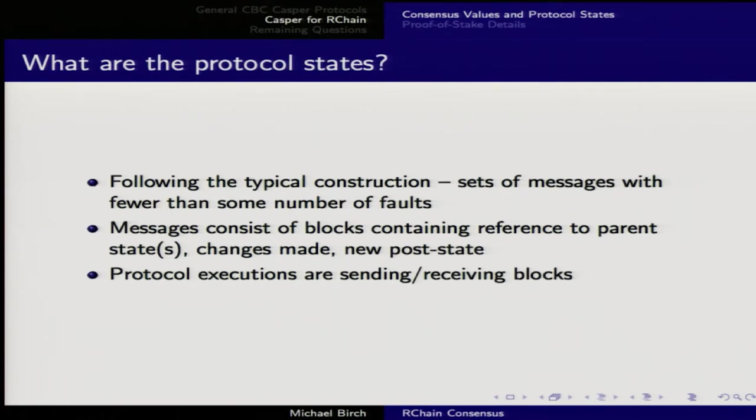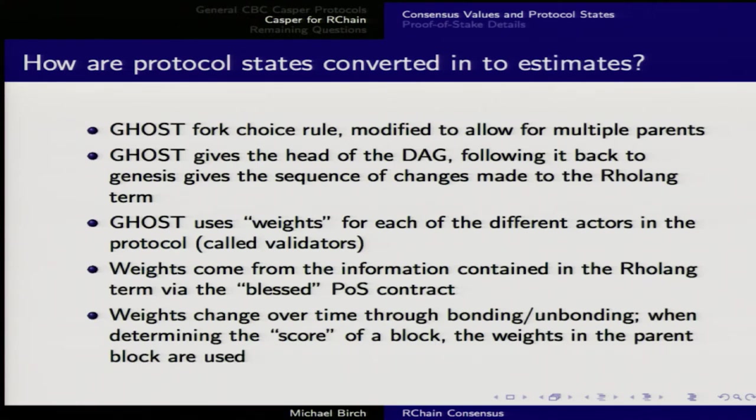For a typical construction, sets of messages with fewer than some number of faults — messages consist of blocks containing a reference to the parent state, the changes made, and the hash of the new state. Protocol executions are again sending and receiving blocks. GHOST is the fork choice rule — it stands for Greedy Heaviest Observed SubTree. It's a fork choice rule modified for multiple parents; in Bitcoin you always have a single parent, whereas here we have a DAG.